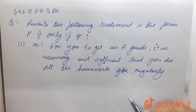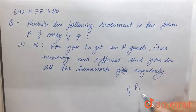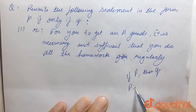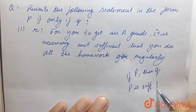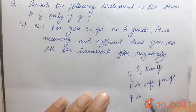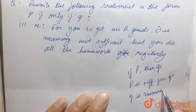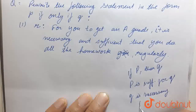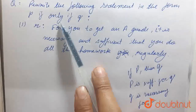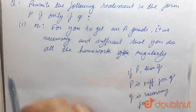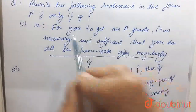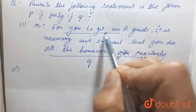Here I can see the statement is in the form 'if P then Q'. So that means P is sufficient for Q, and also Q is necessary for P. So the 'P if and only if Q' form of this statement — here I consider this as Q and this as P.